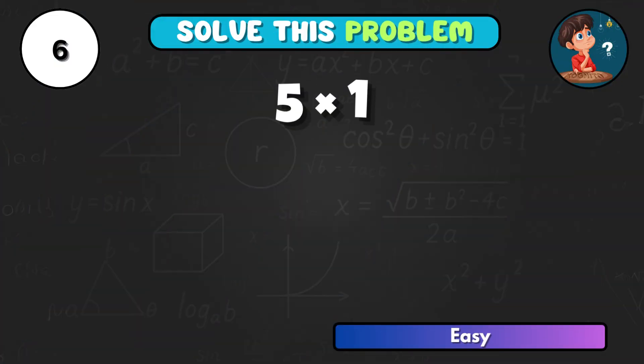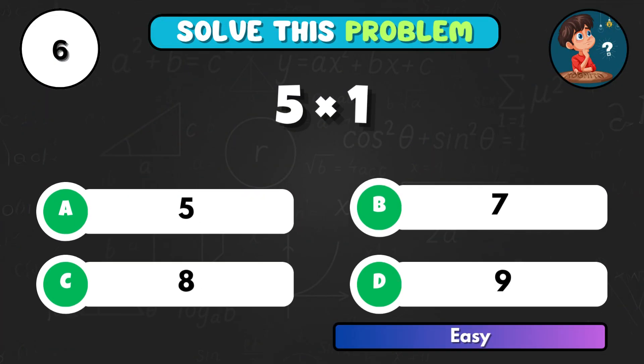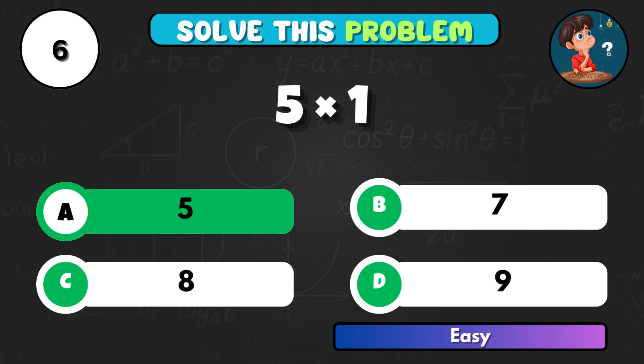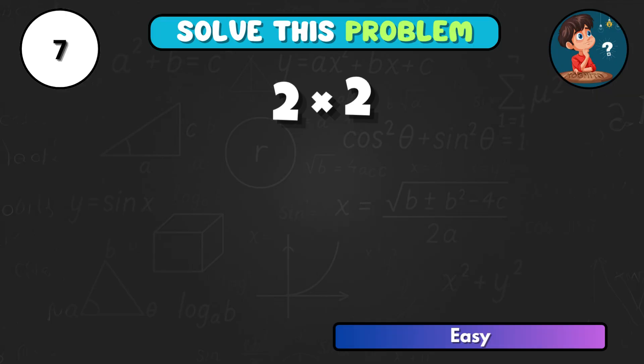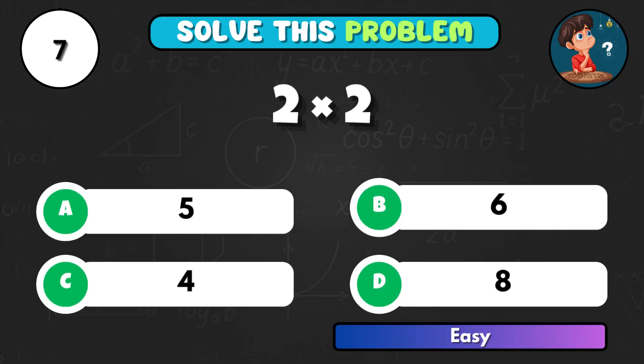Now 5 times 1, an easy one. That's A, which equals 5. 2 times 2, what do you get? Correct letter C, making 4.